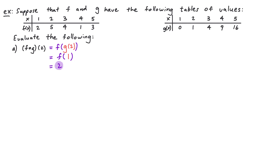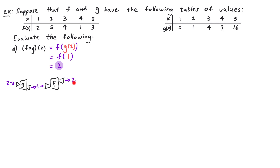Let's also think about this example in terms of our diagram. When we do f composed with g, the g function comes first and then we have the f function. So when we do f composed with g of 2, we're inputting 2 into the g function first — looking at the table for g, when we input 2 we get output 1. We then take that 1 and plug it into the f function. When 1 goes into f, 2 comes out. So 2 is the answer to our composition.